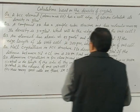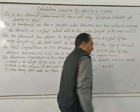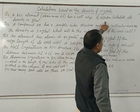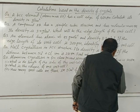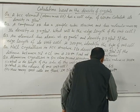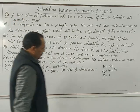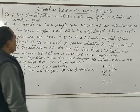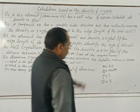In the first question, the given data: atomic mass M is equal to 65, edge length A is equal to 420 picometers. The element has a BCC unit cell, which means Z is equal to 2 — the number of atoms per unit cell. So what is the required formula for calculating density?